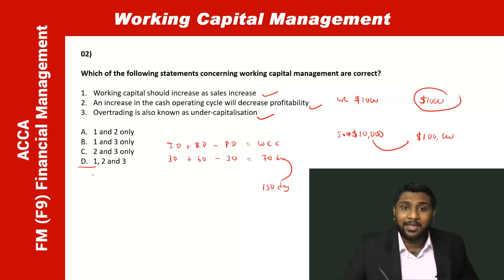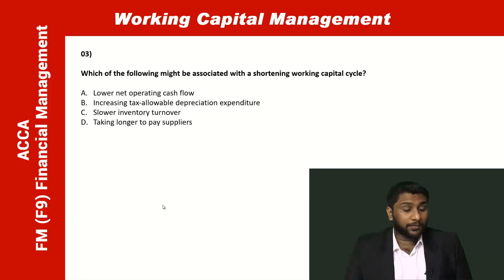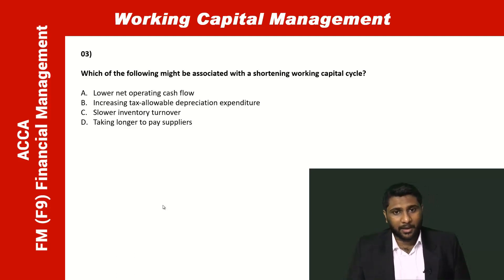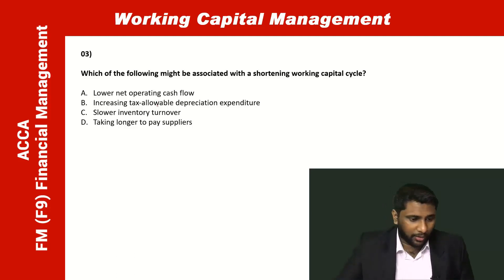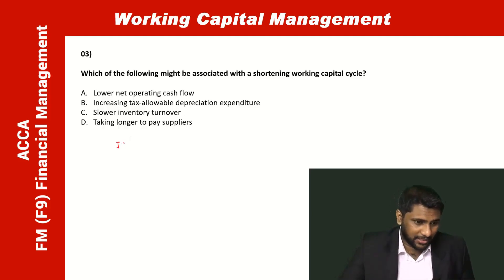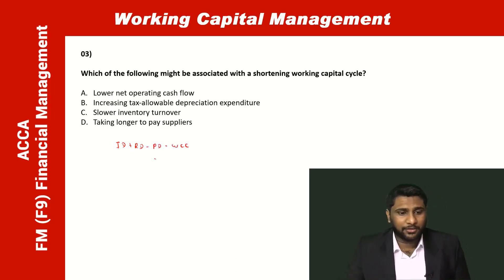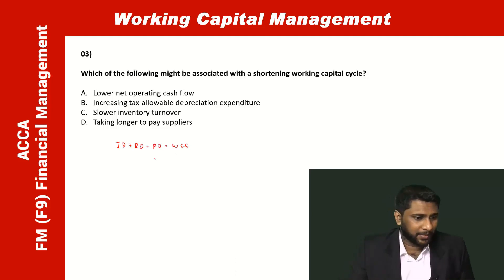Which of the following might be associated with a shortening working capital cycle? The working capital cycle for a buying-and-selling business is: inventory days + receivable days − payable days = working capital cycle (operating cycle).